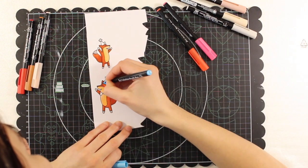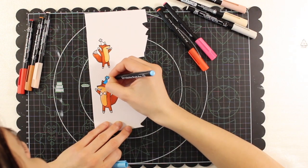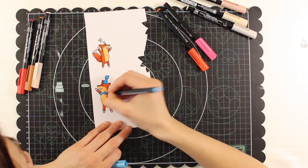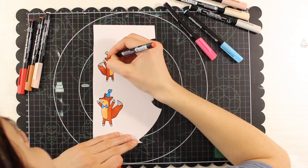Then some blue and light blue for the cap of the big fox and some red for the one of the small fox.